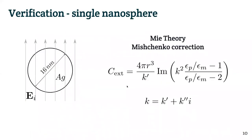The first step to know that we were solving the equations correctly was to perform a verification analysis. We wanted to make sure we were solving the equations right. For that, we used an analytical solution for the case of an isolated nanoparticle. We used a silver nanoparticle because we were able to find the dielectric constants for different wavelengths in the literature. With the Mie theory and the Mischenko correction, we have this equation here that allowed us to compare.